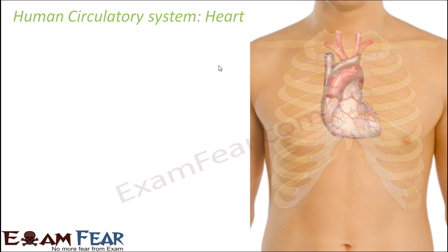When we talk about the human circulatory system, the main pump or the main controller of the blood flow is nothing but the heart. The heart is the muscular pumping organ — it is made up of muscles which are capable of contracting and relaxing, and due to these movements of contraction and relaxation,